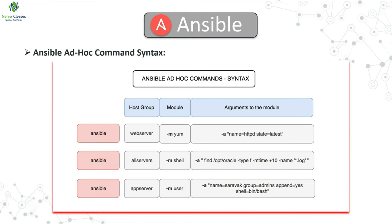The syntax for Ansible ad hoc commands: write ansible, then the host group name (e.g., webservers, all servers, ftp servers), then the module name with option -m (e.g., yum, dnf, user), and finally the argument with option -a. For example, to create a file with 755 permissions using an ad hoc command, you write: ansible [host_group] -m file -a "[path] state=touch mode=0755". I'll show this on the terminal — executing this command on the web servers group will create a test file in /tmp on the client node.